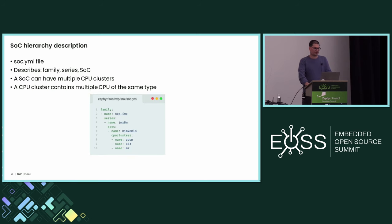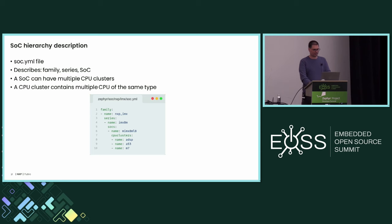Let's start the implementation. Inside the SoC vendor, we need to look at the soc.yaml file, which describes how your SoC looks in the Zephyr model. We have the family — for NXP it's named NXP iMX — the series is 8M, and the SoC name is taken from the datasheet. Then we define the clusters. A cluster can contain CPUs of the same type, and we have multiple clusters for different CPU types here: ADSP, A53, and M7.